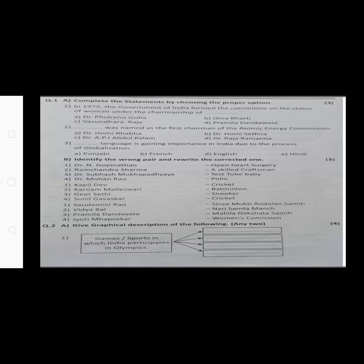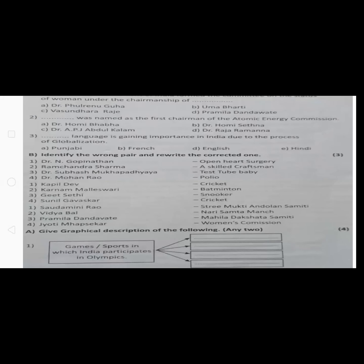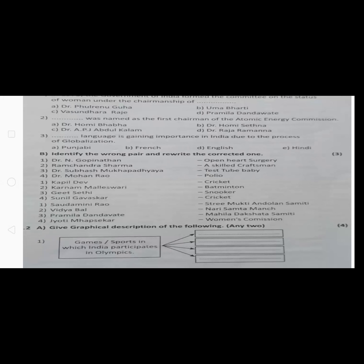In the second part, B part, you have to identify the wrong pair and rewrite the correct one. First you have to choose the wrong pair, then rewrite it with the correct one. Some students only identify the wrong pair but don't rewrite the correct one — do not do that.